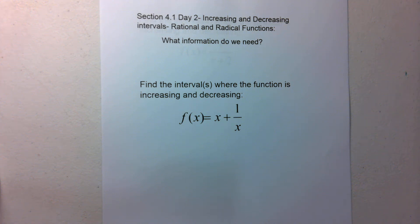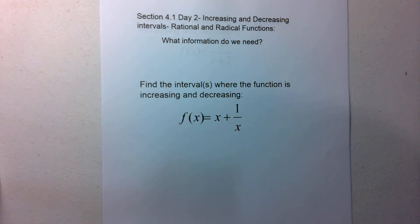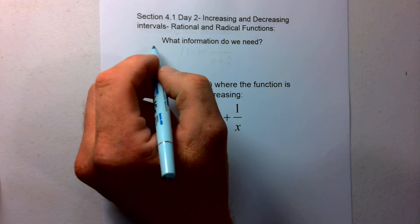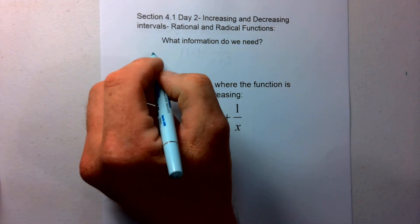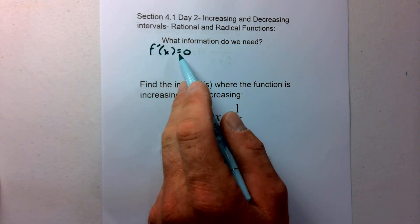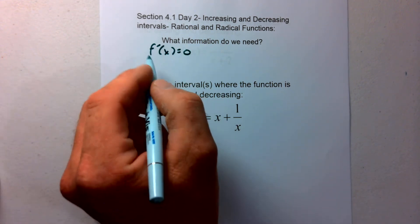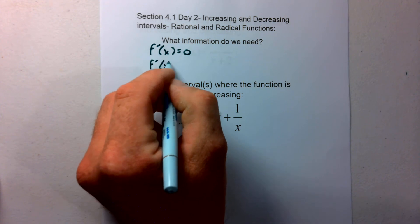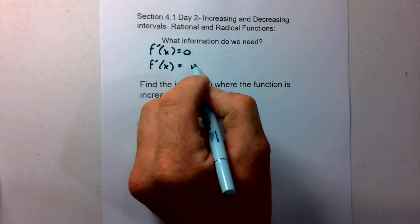Welcome back. Section 4.1. We're going to continue our discussion on increasing and decreasing intervals, but today we're going to focus on rational and radical functions. So what information do we need? We talked with polynomials about what information we need. When we did our first derivative test for polynomials, we set f prime of x equal to zero and found those critical values. Well, we also need to now think about when f prime of x is undefined.